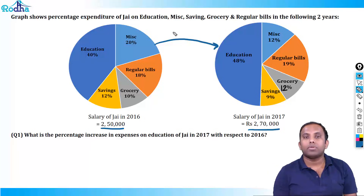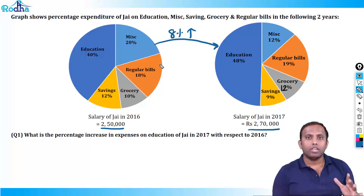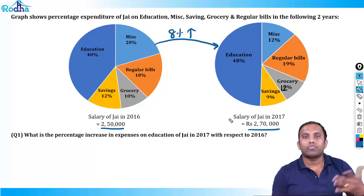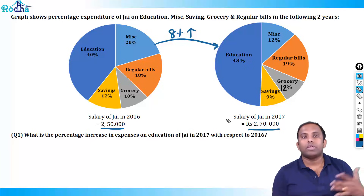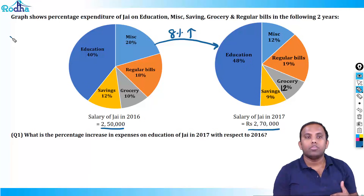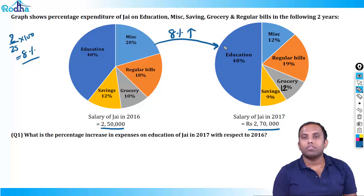Directly, what is the percentage change? Change of 20,000 on 2,50,000 — that is 2 on 25. What is 2 by 25 into 100? That is 8%. So this pie chart is 8% greater than this pie chart.